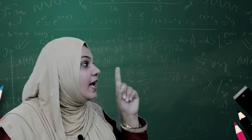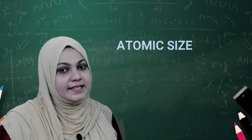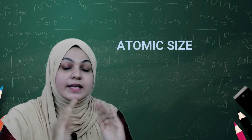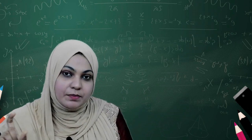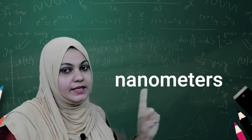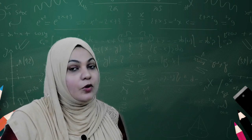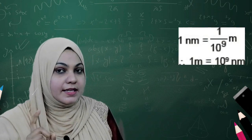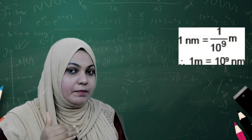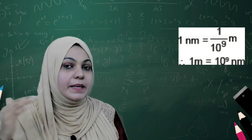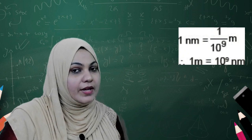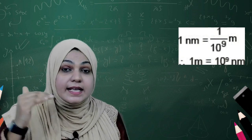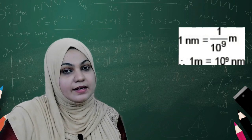Since atoms are very small, how do we find the size of an atom? Our next heading is atomic size. How can we find the atomic size? Atomic radius is always measured in nanometers. 1 nanometer is equal to 1 divided by 10 raised to 9 meters, which we can simplify as 10 raised to minus 9 meters.